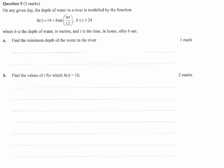So the minimum value is going to happen when this quantity is negative 1. So the minimum occurs at 14 minus 8, which gives you 6 metres.